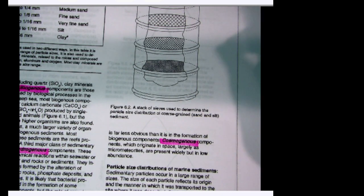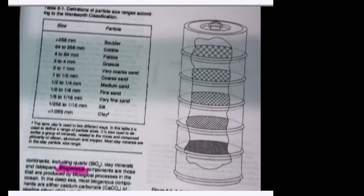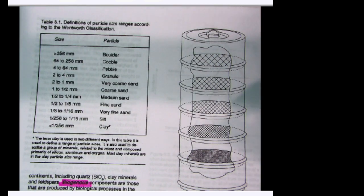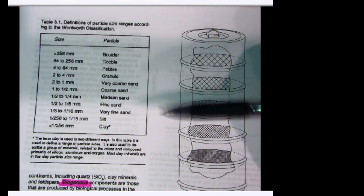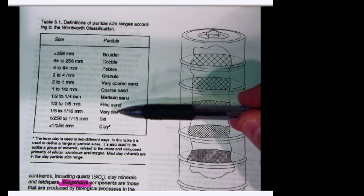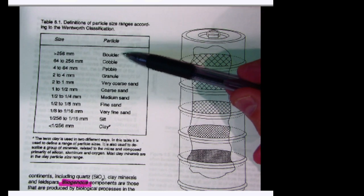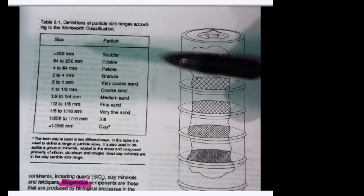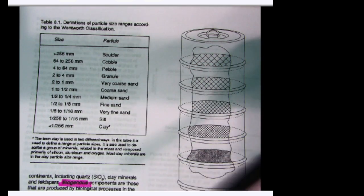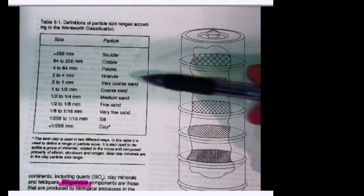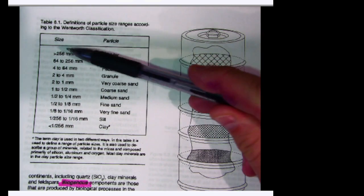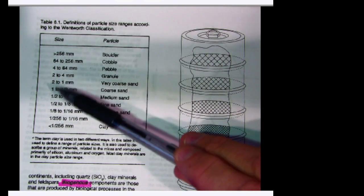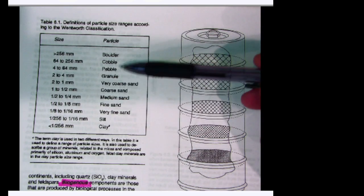Another way to describe sediments is to look at their particle sizes. This lab has a nice figure showing the different particle size ranges. In geology, a boulder is not just a large rock — it's one that is more than 256 millimeters in its widest diameter. If it's between 64 and 256 millimeters, it's a cobble. Then we have pebbles and granules.